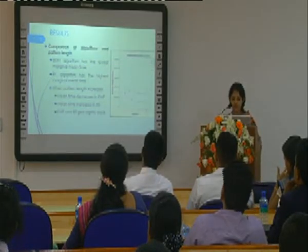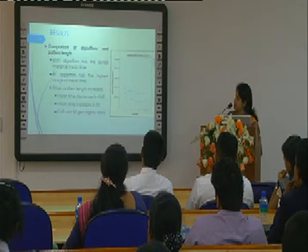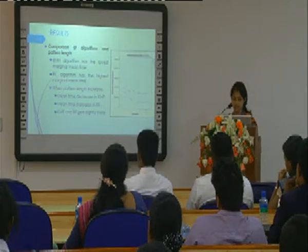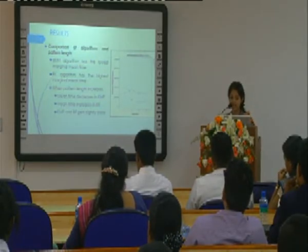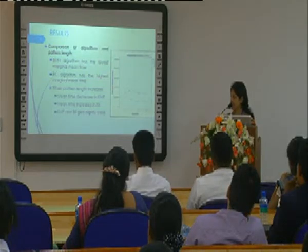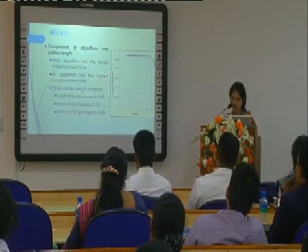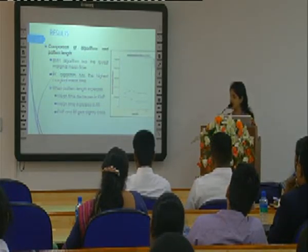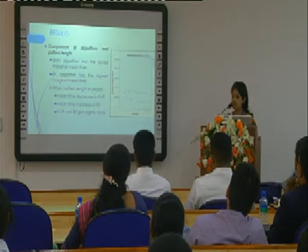Looking at the comparison of algorithms and pattern length, Boyer-Moore Horspool algorithm has the lowest marginal mean time, and Rabin-Karp algorithm has the highest marginal mean time. When pattern length increases, mean time decreases in Knuth-Morris-Pratt algorithm and increases in Rabin-Karp algorithm. The graph also shows that Knuth-Morris-Pratt and brute force get slightly closer as pattern length increases.